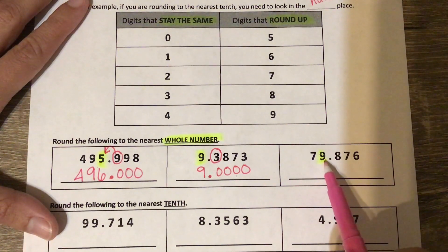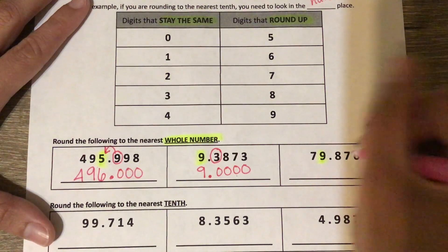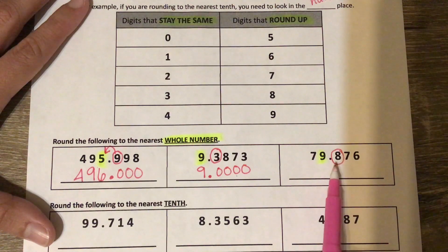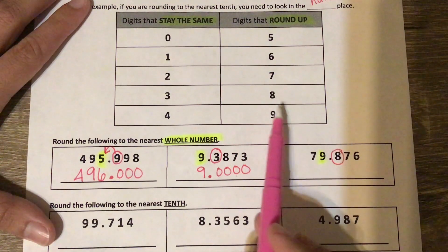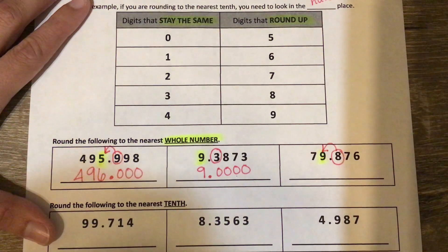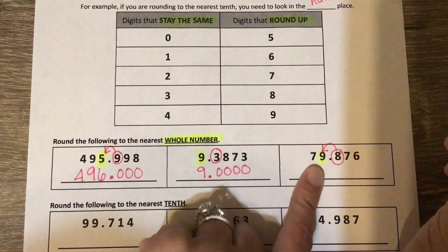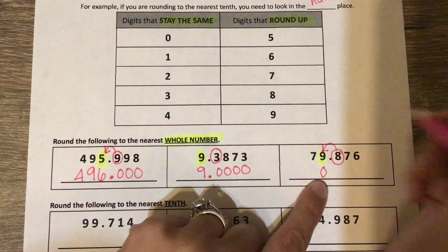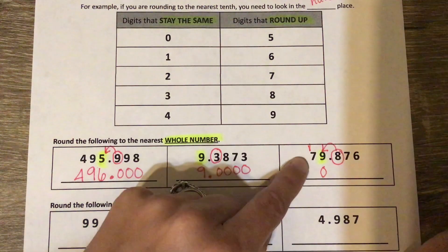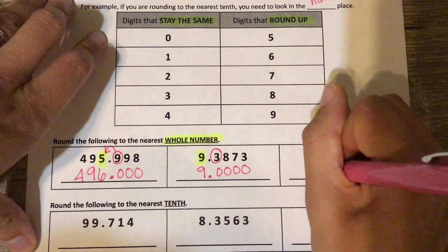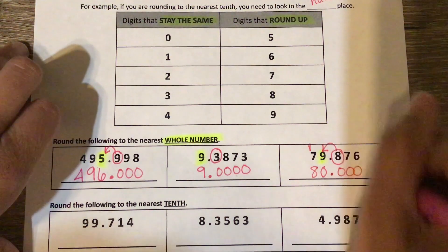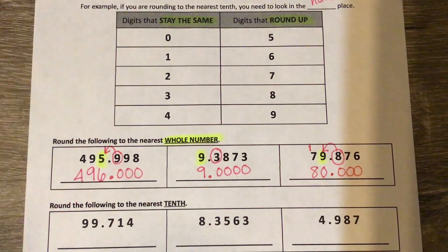This one: we already highlighted the ones place. I circle to the right. The eight on the right means I need to round up. So my nine needs to round up, but it has nowhere to go — nine becomes ten. So I put a zero here and carry the one, adding it to the seven to make eight. Bring down the decimal. Everything to the right becomes zero — or we could just say 80.